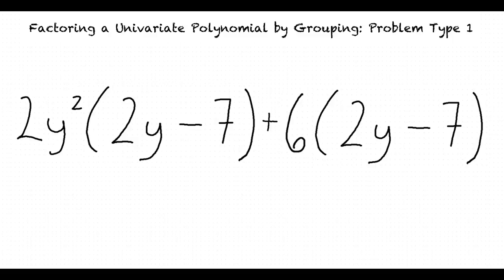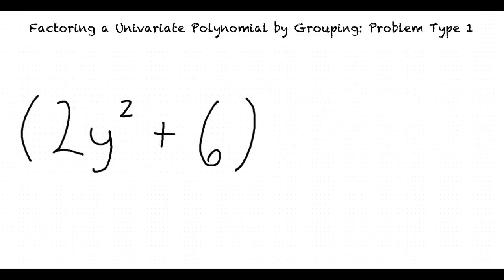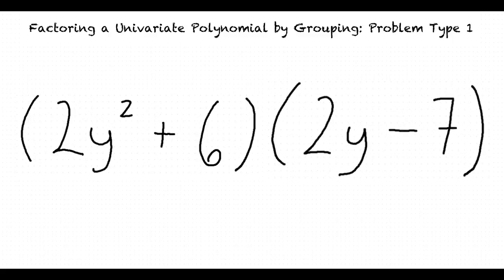Now that we have factored out the GCF, what's the next step? Next we combine the greatest common factors of each binomial into its own binomial yielding 2y squared plus 6. Then multiply that binomial by the repeated binomial 2y minus 7, resulting in a final answer of 2y squared plus 6 times 2y minus 7. That's right!